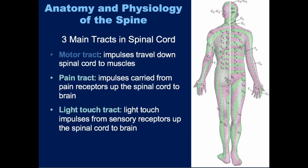The pain tracts carry impulses from pain receptors up to the spinal cord and up to the brain — the opposite direction of the motor tracts. When they enter the spinal cord, the pain tract crosses over and carries the impulse up the opposite side. So if pain is being sensed on the left side of the body, it is tracked up the right side of the spinal cord. You also have another tract for light touch — the way you sense pain and light touch are through completely different tracts in your spinal cord.